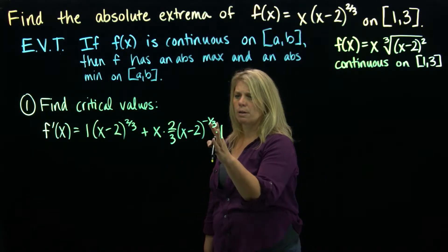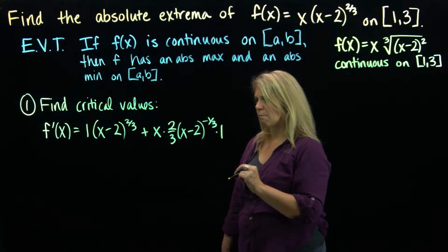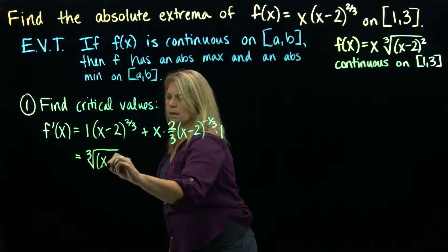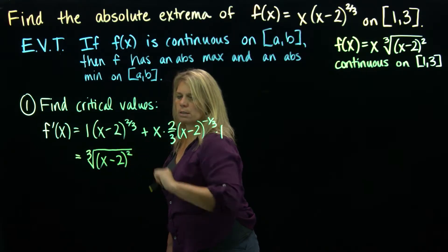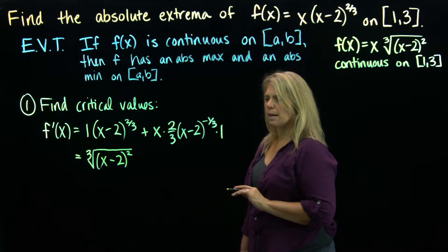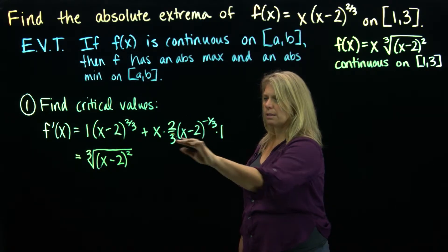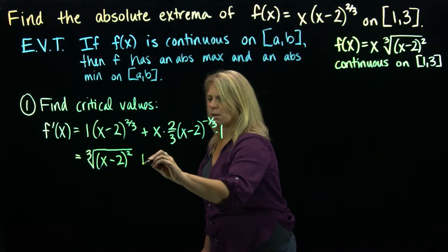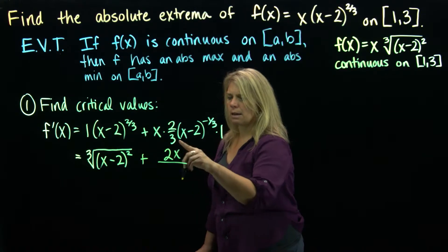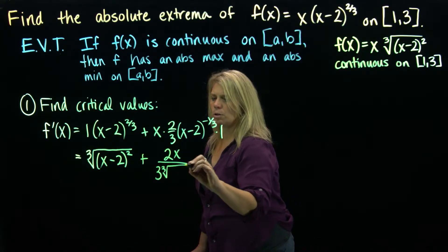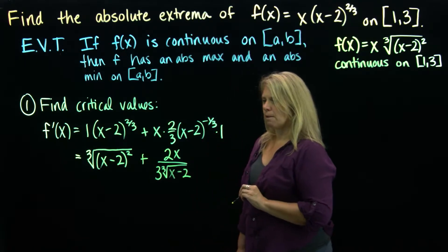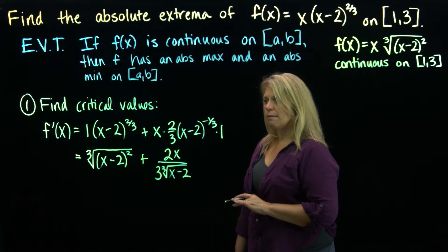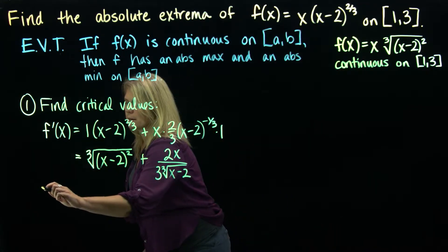With fraction and negative exponents, I want to rewrite the derivative to think about it more easily. The first term is the cube root of (x minus 2) squared. The second term has a negative exponent, so that becomes a denominator: the numerator is 2x, and the denominator is 3 times the cube root of (x minus 2). I need to think about where that derivative is 0 and where it does not exist. Let's talk about the does-not-exist part first.